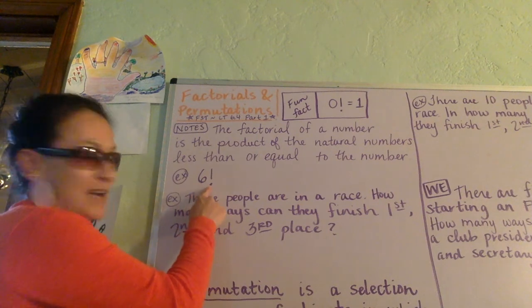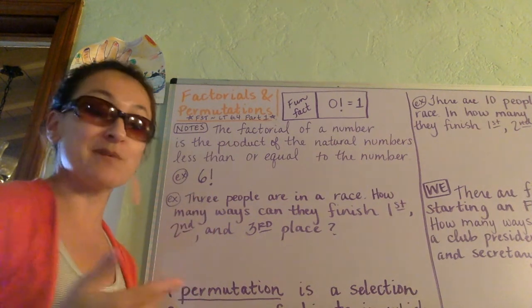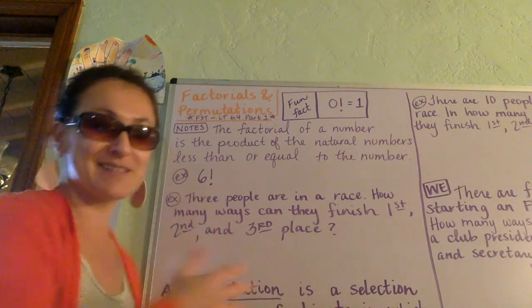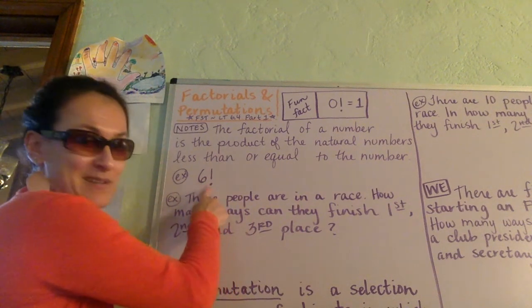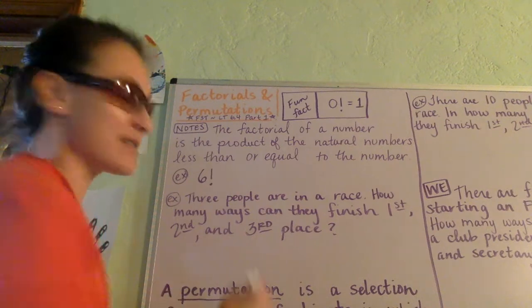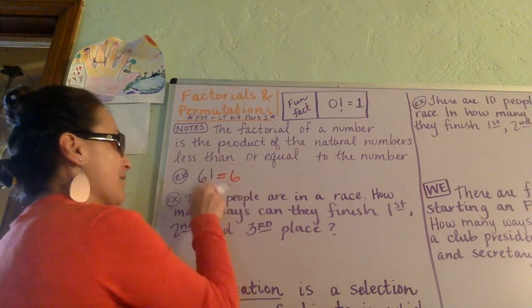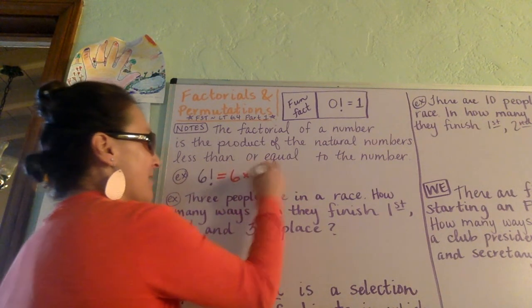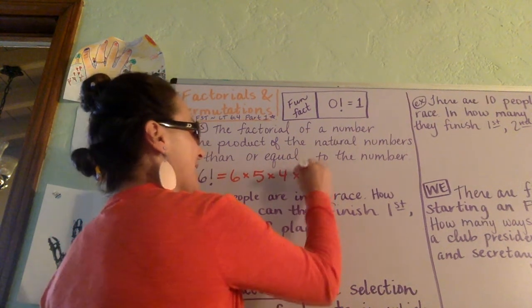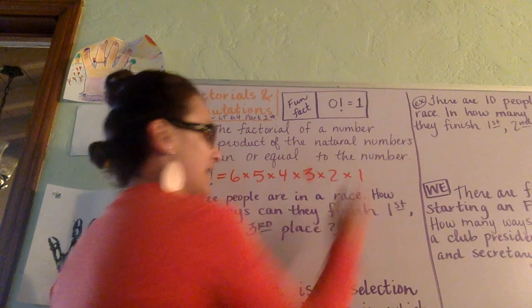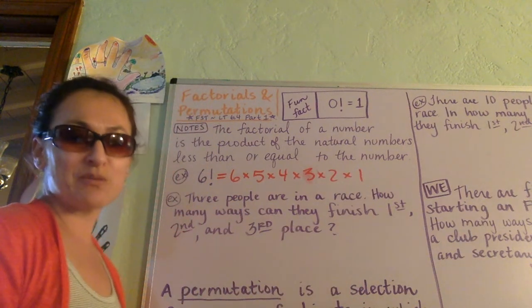Here's an example for us. We say 6 factorial. I know this looks like, if you were in English class, this would look like 6 exclamation, but it's not like that. It's 6 factorial. What this means is it's the product of the number that's listed and all the natural numbers that come underneath it, all the way down to 1.